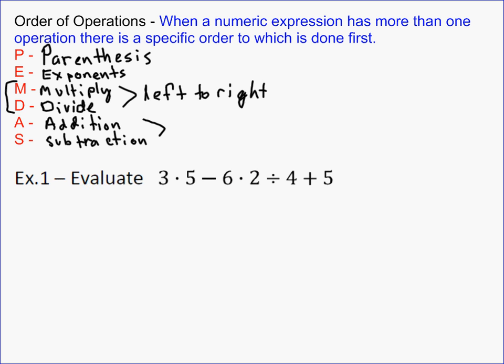Let's look at some examples following order of operations. In example one, we don't see any parentheses, and there are no exponents, so we go straight to multiplication and division. The first multiplication is 3 times 5, which is 15. We don't want to subtract until we've done all multiplication and division, so we'll ignore that subtraction sign for now.